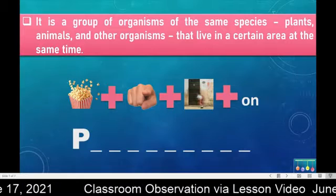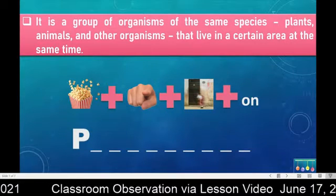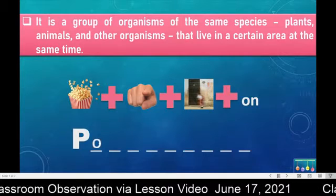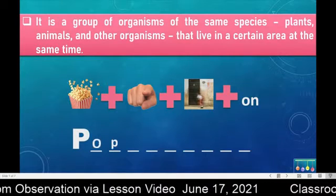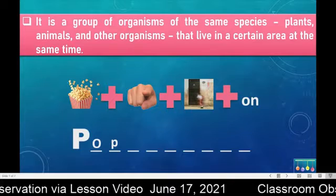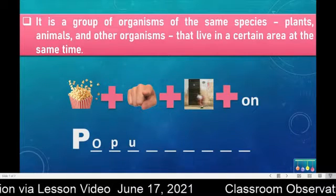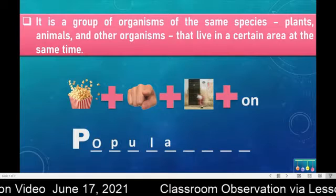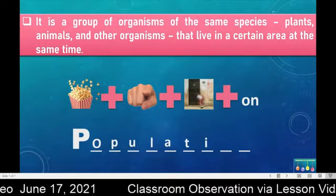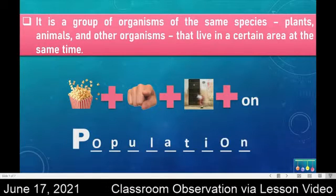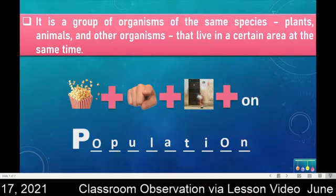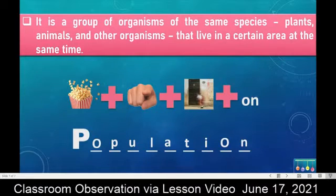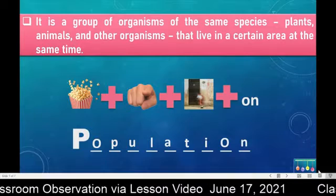Okay, time's up. Any word in mind? The first image is popcorn, so we write 'pop.' The next image is pointing to you. And then the third image shows a child going to school, maybe late. Then you write the last letters O-N. So the word is population. Did you guess it right? I hope so.